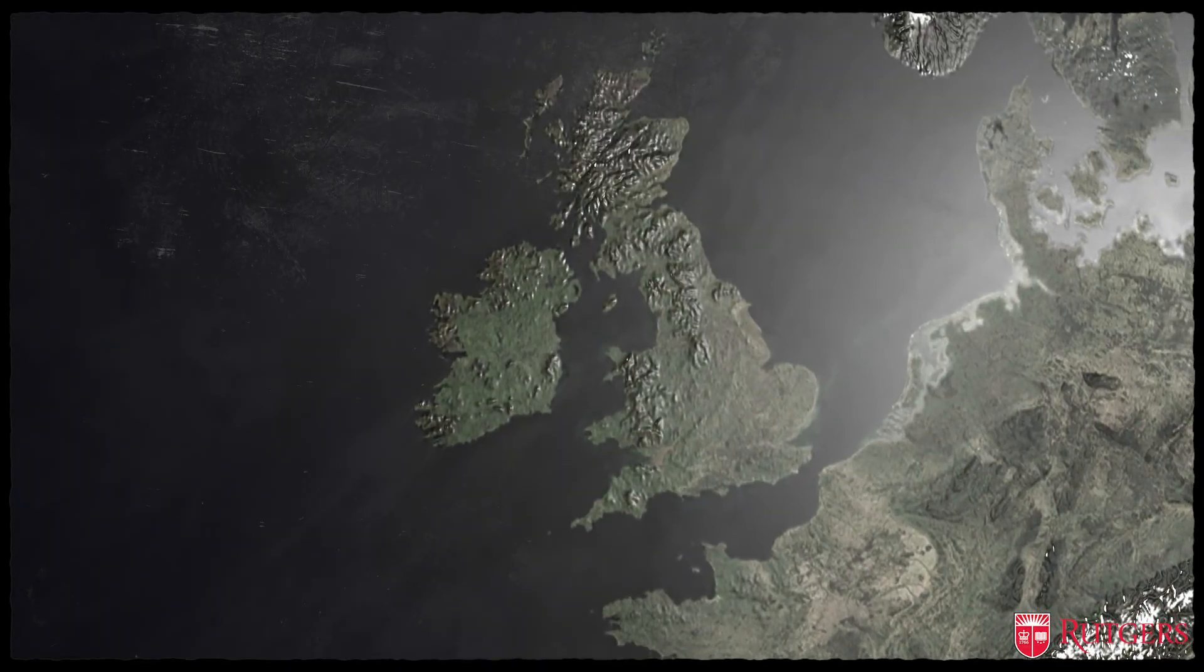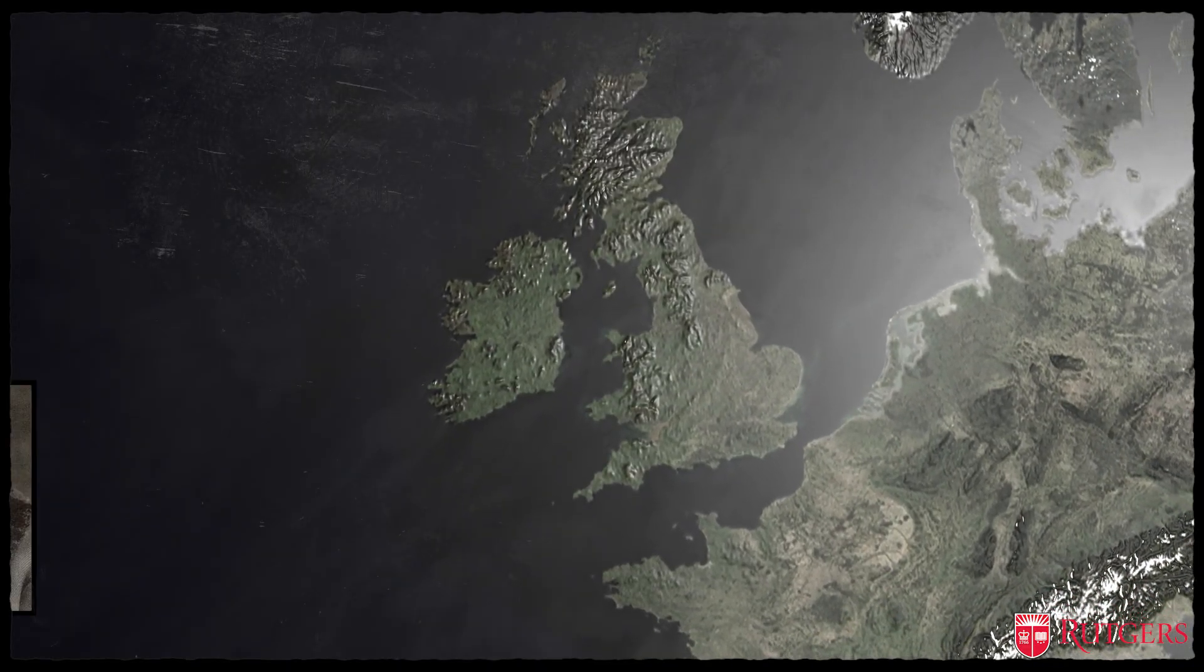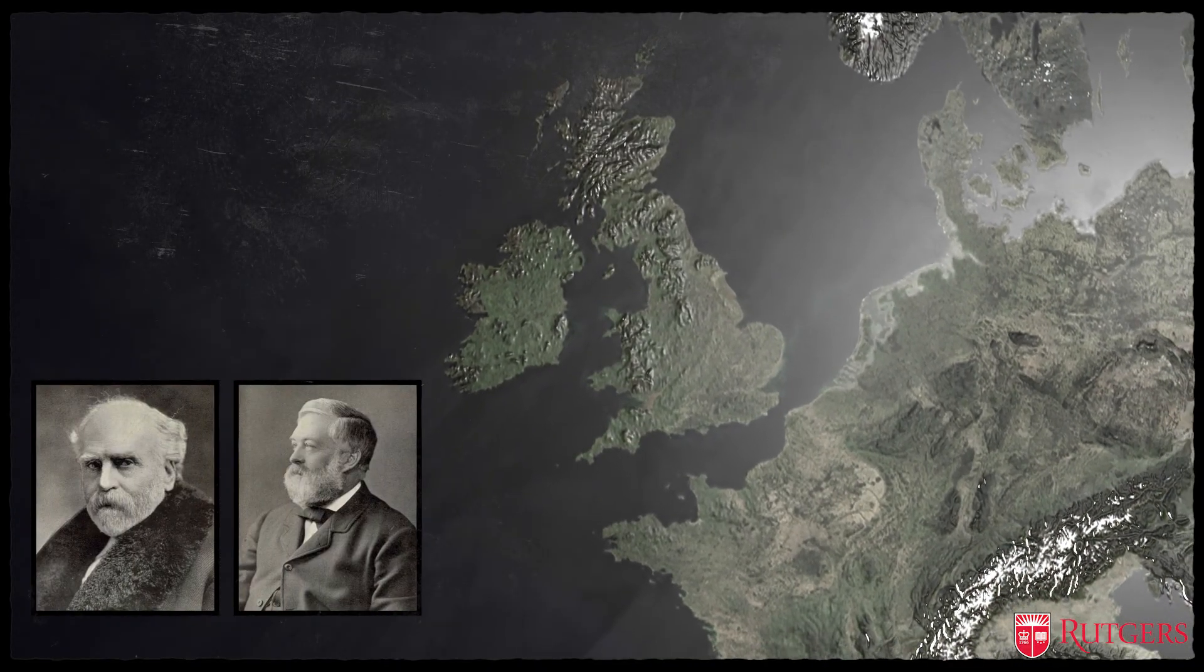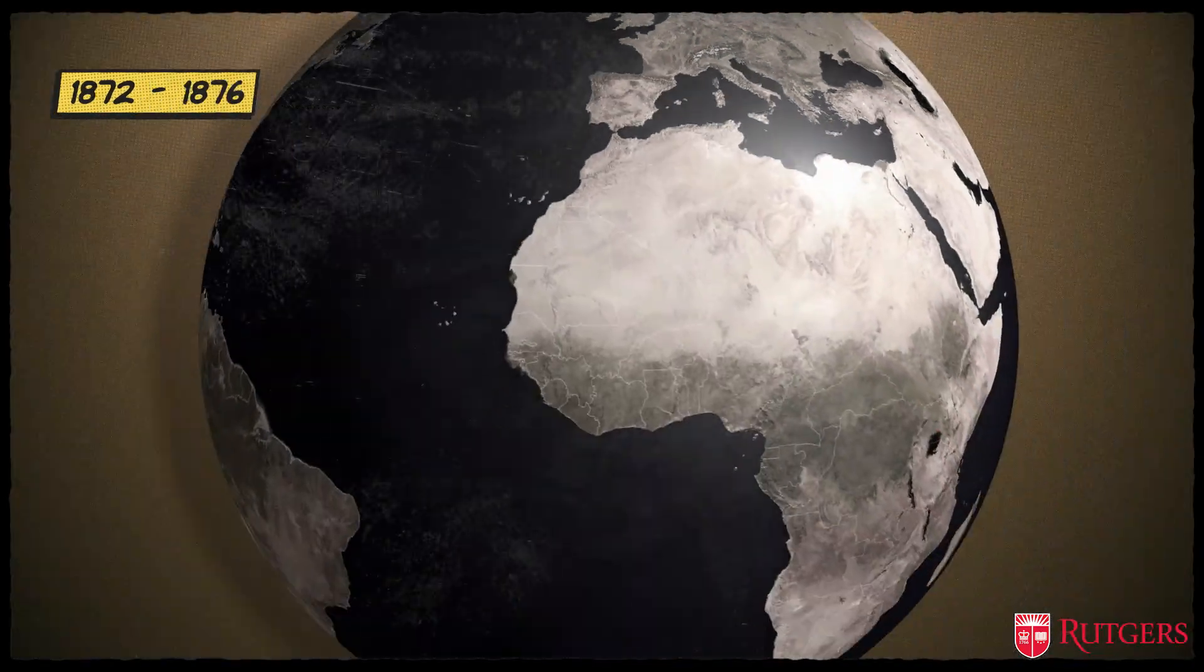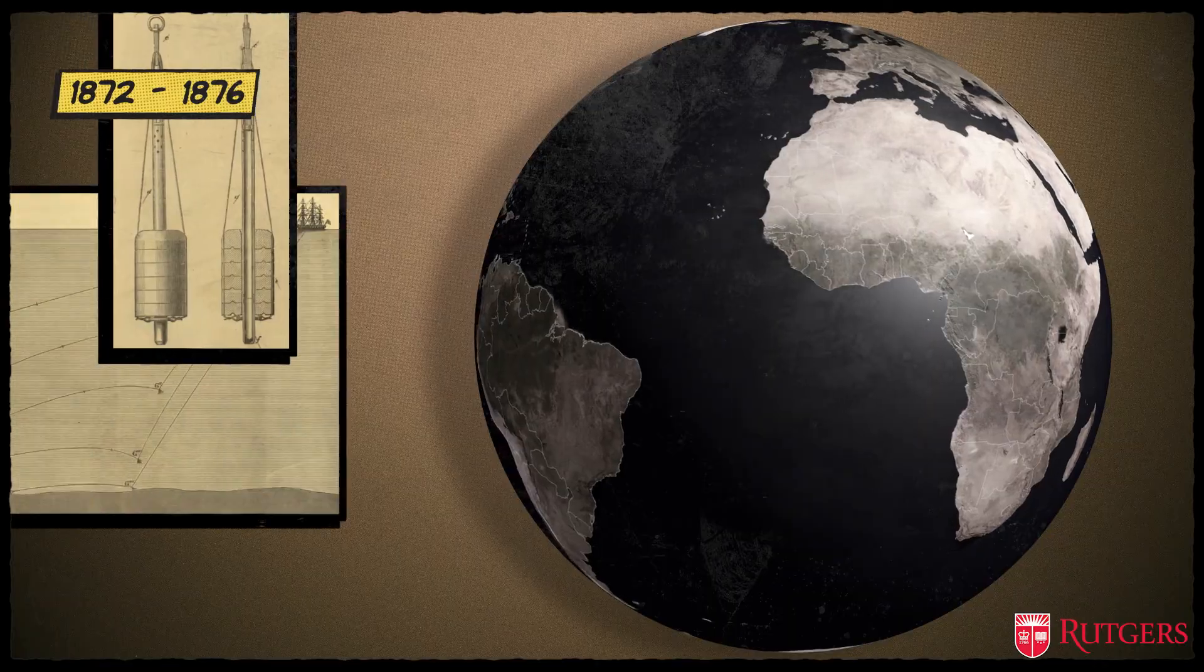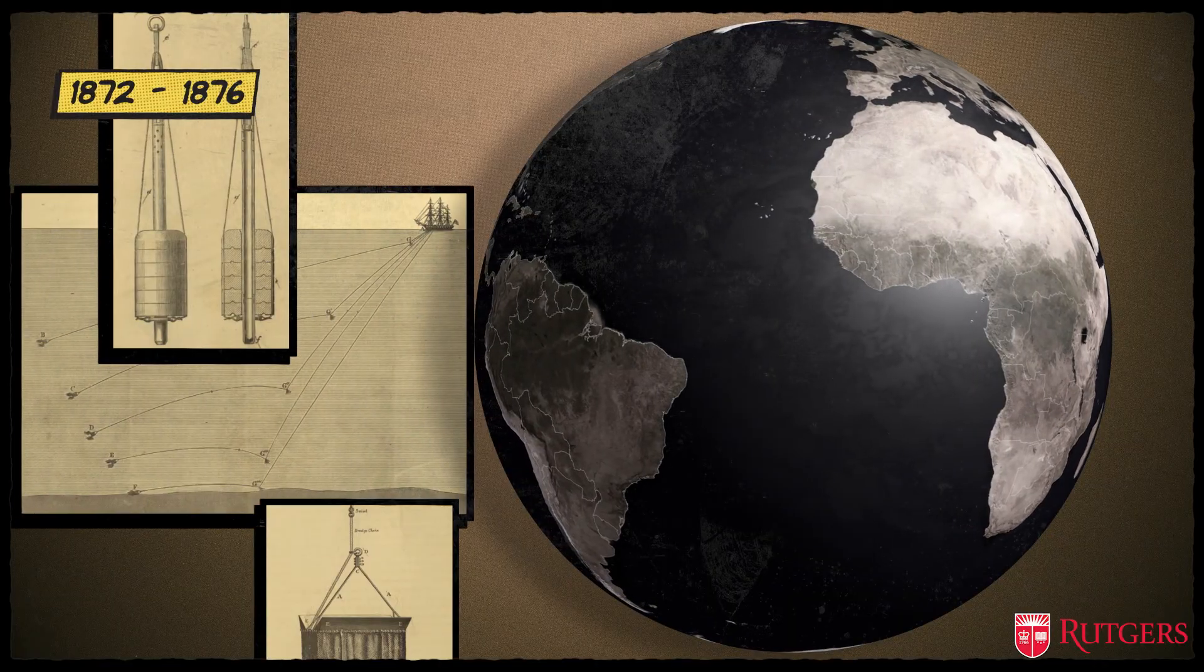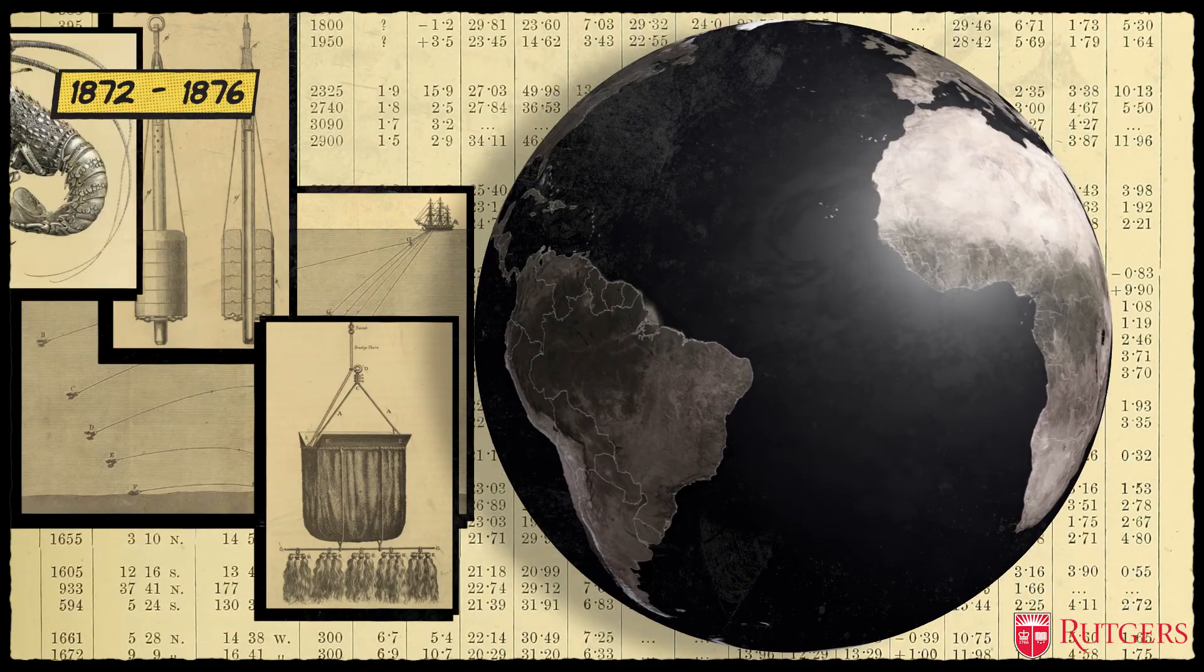One of the first expeditions meant to really look at the ocean started with John Murray and Charles Wyville Thompson and the HMS Challenger in 1872. These scientists sailed around the ocean using weights and rope, measuring ocean depths, scooping up mud and animals from the sea floor. They took a lot of notes, and they drew a lot of pictures.